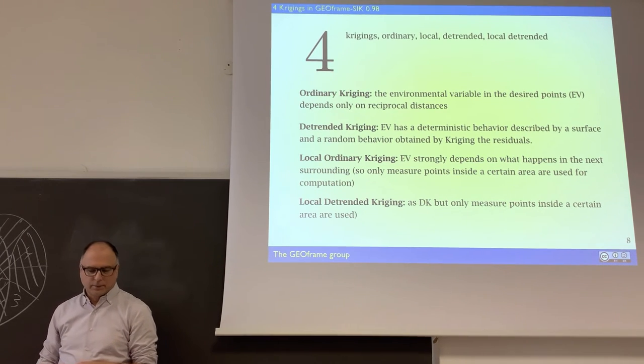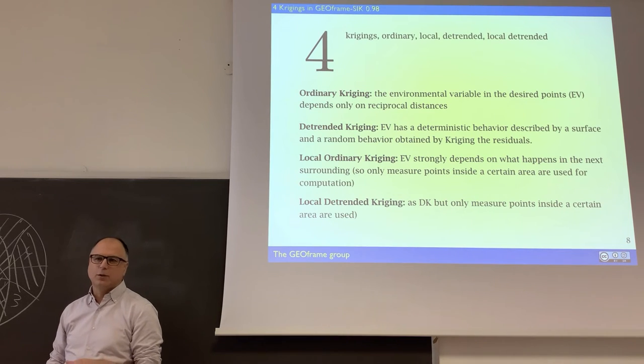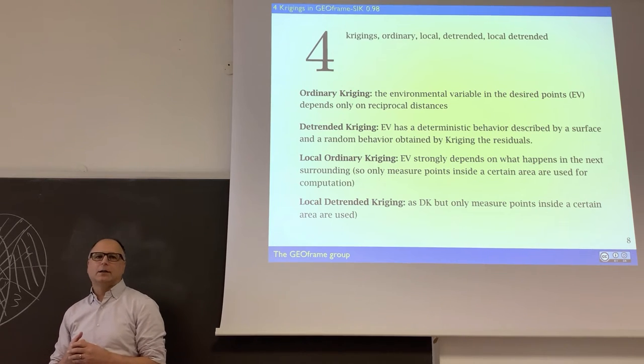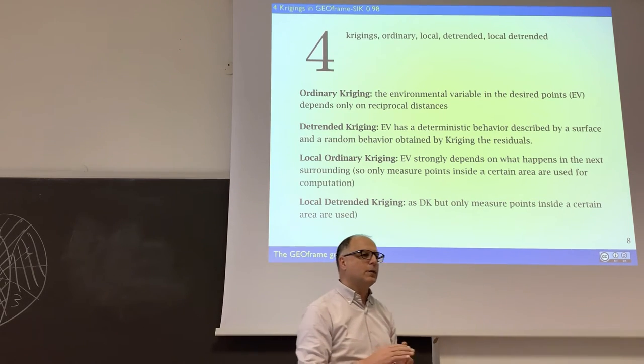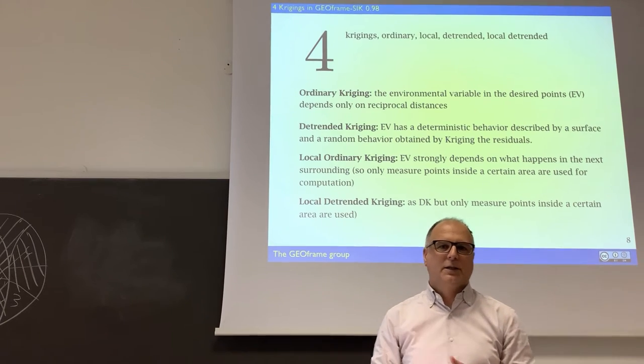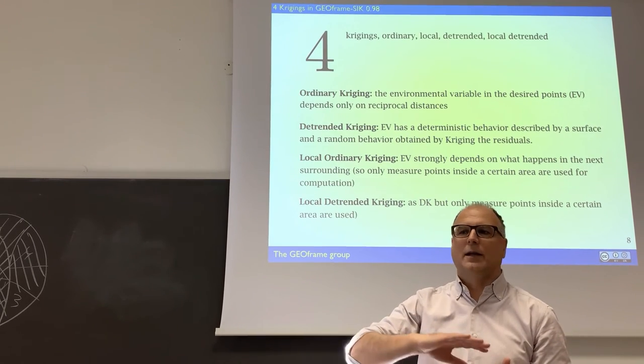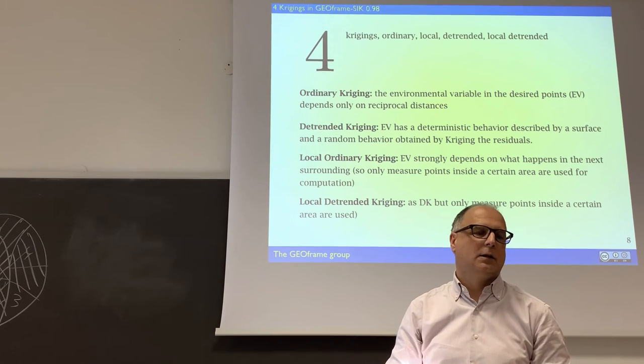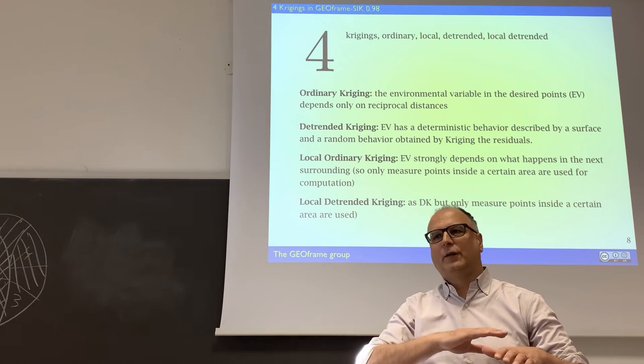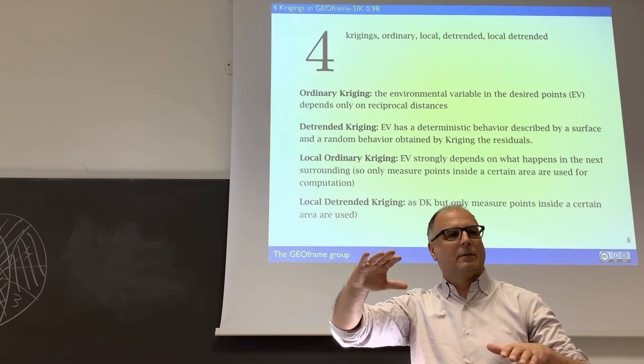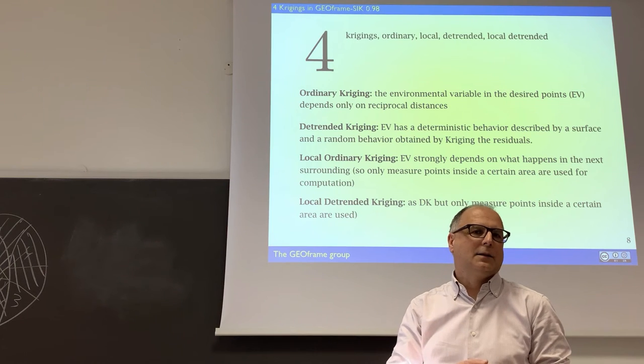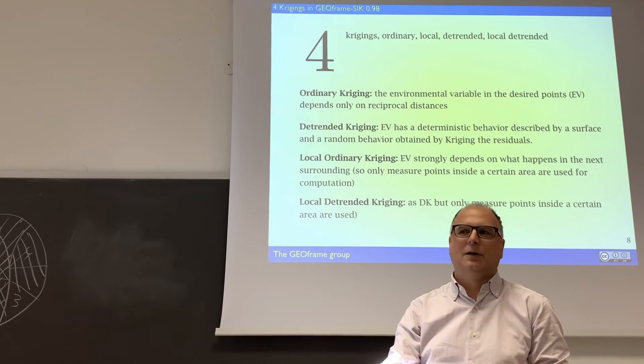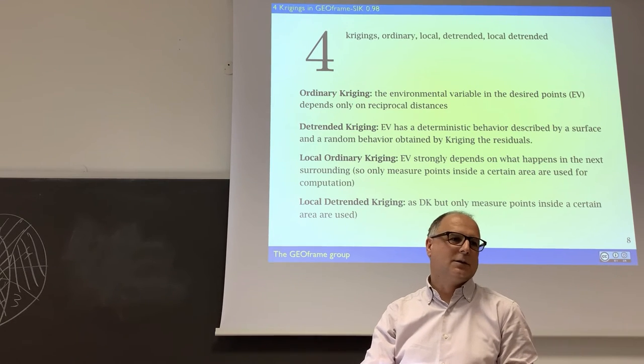The ordinary kriging, or simple kriging, is the one that I explained theoretically to you. So the trended kriging is assumed that the process is stochastic but also have a trend, which is assumed linear or locally linear here. And so you first fit the plane, and then subtract the data from the data of the plane, and do the kriging, the simple kriging on the residuals. That's all.